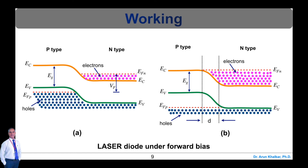This narrow zone in which population inversion occurs is called the inversion region or active region. The recombination of electron and hole pairs leads to emission of spontaneous photons. The spontaneous photons propagating in the junction plane stimulate the conduction electrons to jump into the vacant states of the valence band. This stimulated electron-hole recombination produces coherent radiation. For example, a gallium arsenide laser emits light at a wavelength of 9000 angstroms in the infrared region. This is how the lasing action happens in the semiconductor laser.